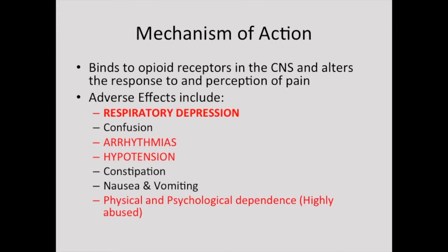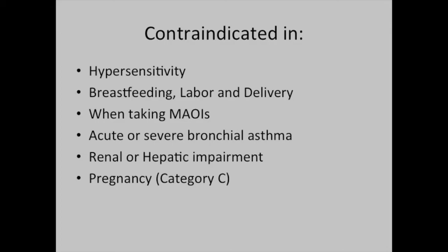The mechanism of action binds to opioid receptors in the CNS and alters the response to and perception of pain. Adverse effects include respiratory depression, confusion, arrhythmias, hypotension, constipation, nausea and vomiting, and physical and psychological dependence. It is contraindicated in hypersensitivity, breastfeeding, labor and delivery, when taking MAOIs, acute or severe bronchial asthma, renal or hepatic impairment. It is a pregnancy category C drug.